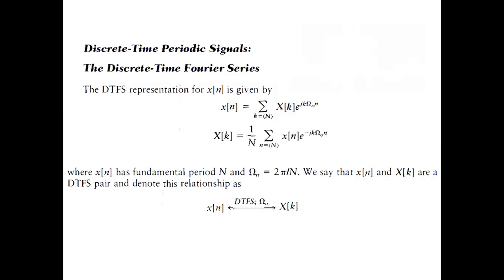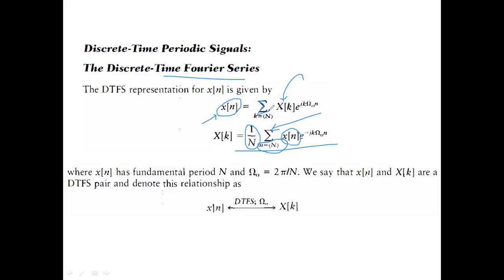The Discrete Time Fourier Series is not in your syllabus, but briefly: the formula contains a 1/N factor indicating periodicity, and a summation indicating discrete-time signals. The inverse DTFS formula also has a summation — unlike the continuous-time Fourier series which had integration. The DTFS coefficients x(k) are periodic in nature: after N samples, the same values repeat.